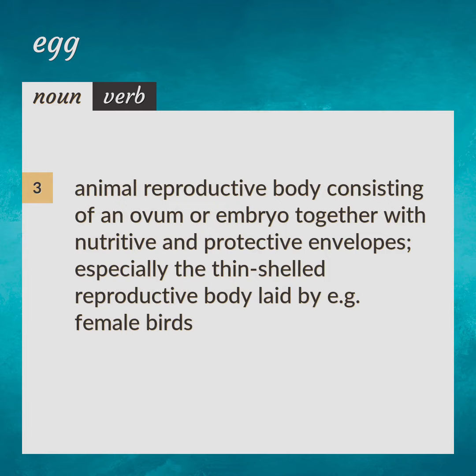Animal reproductive body consisting of an ovum or embryo together with nutritive and protective envelopes, especially the thin-shelled reproductive body laid by female birds.